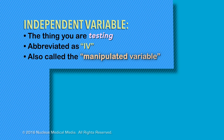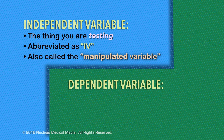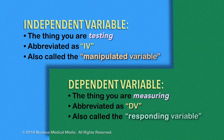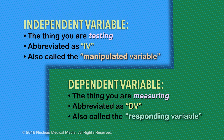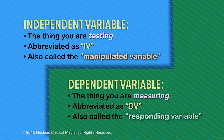In an experiment, the dependent variable is the thing you're observing and measuring — the thing you're anticipating may be affected as a result of exposure to the independent variable. It's often abbreviated as DV and sometimes called the responding variable because it responds to the change that you make.